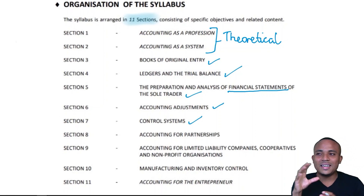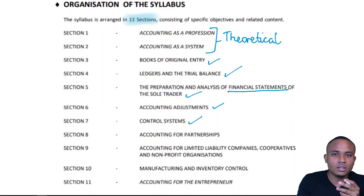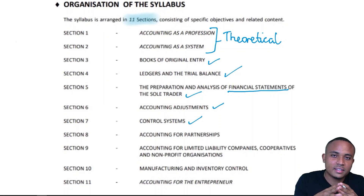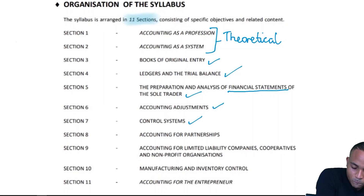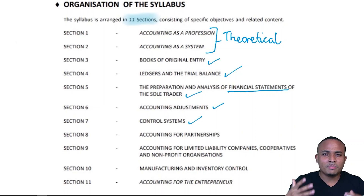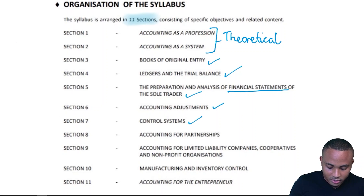In the latter stages of the accounting cycle, we have something called adjusting and closing entries, and Sections 6 and 7 deal with that. If there are any errors, we will make changes. And not only errors — there are certain changes that need to be made before you produce your financial statements, and this is handled in Sections 6 and 7 of the syllabus.